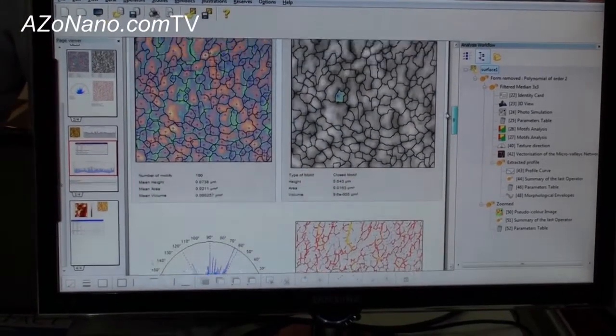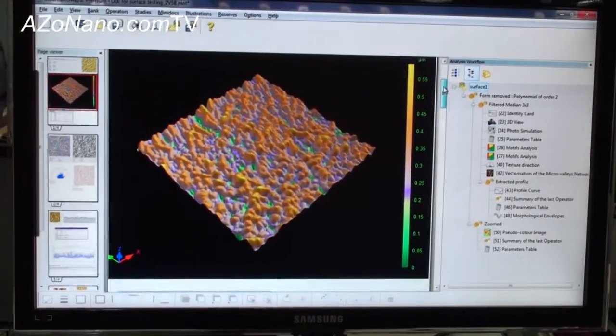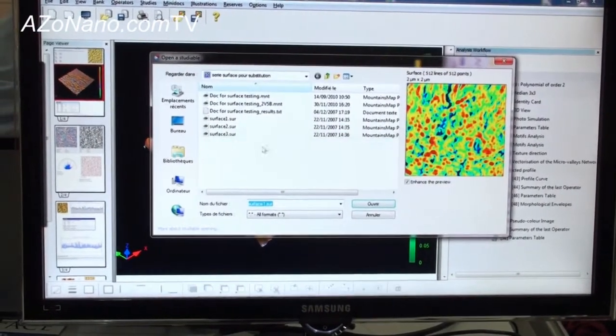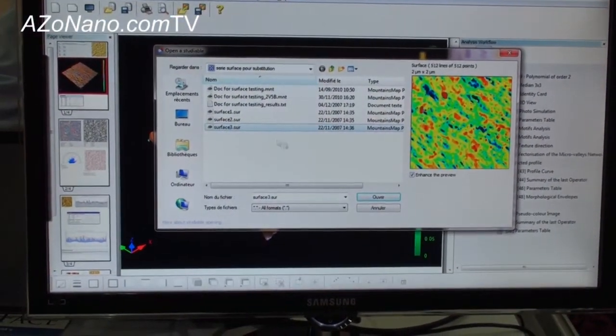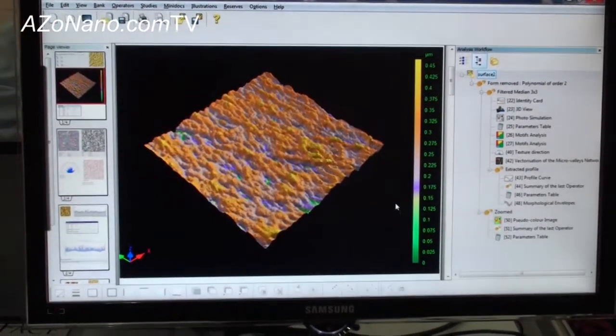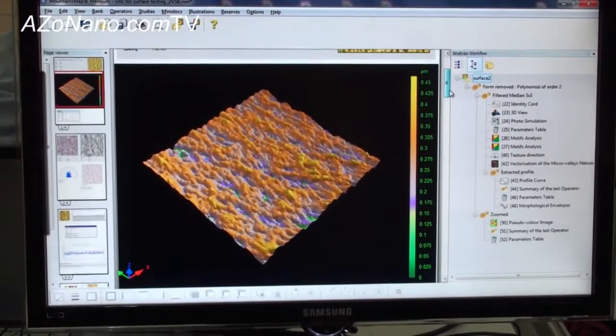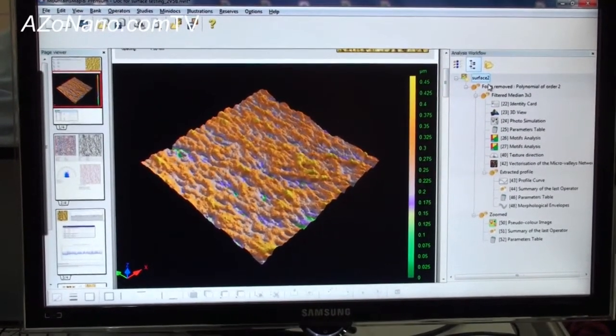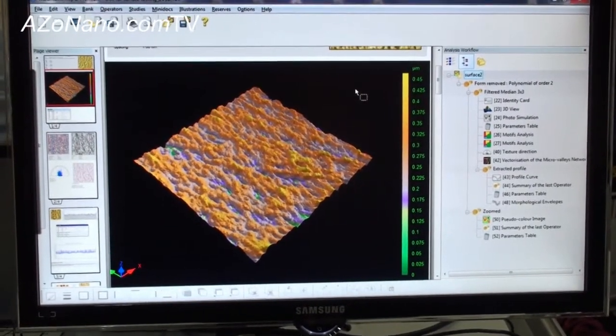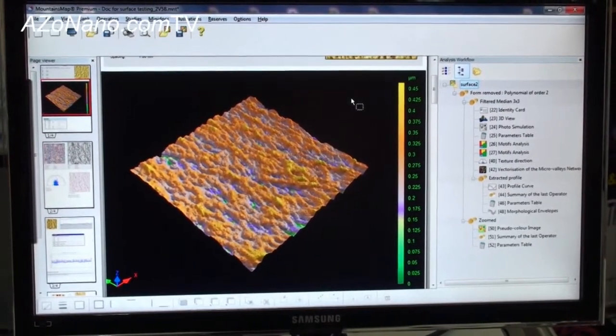So you can see that all features now, all analysis, all studies refer to the surface number one. And if I do it again, I can make maybe surface number two. So everything could be refreshed by a simple clicking on a mouse. So any document can be used as a template and could be applied on a series of measurements. So this is a general benefit of the mountain software technology.